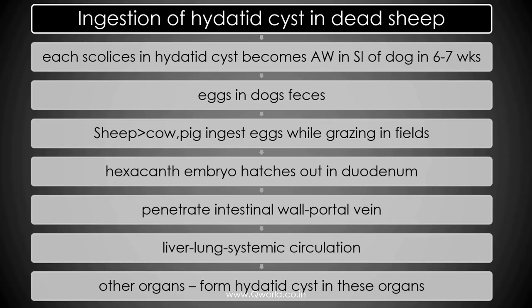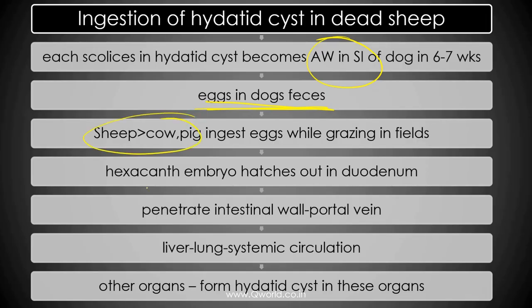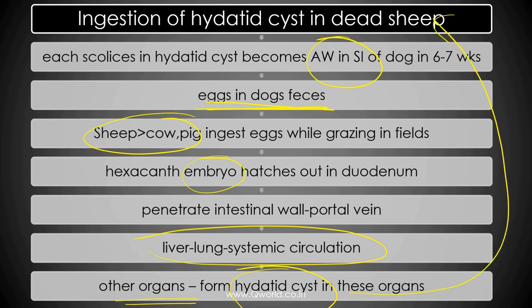The dog will ingest the dead sheep, which as an intermediate host carries the larval form — the hydatid cyst. This larva becomes the adult worm in the small intestine of the dog. Eggs are released in the faeces of the dog, and these are the infective form for intermediate hosts — sheep, cow, pig, or humans. The embryo is released, penetrates the intestinal wall, goes to the portal vein, liver, lung, and systemic circulation, reaching other organs where it becomes a hydatid cyst. For humans this is a dead end because dogs do not get access to human meat.